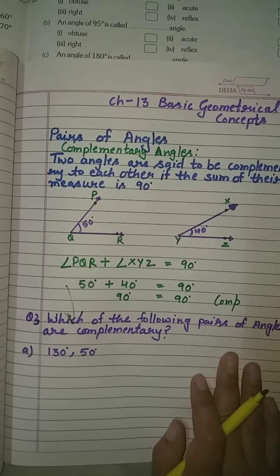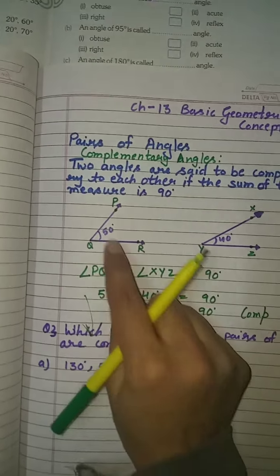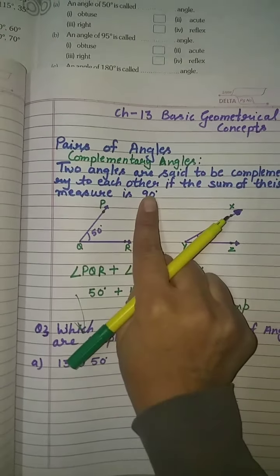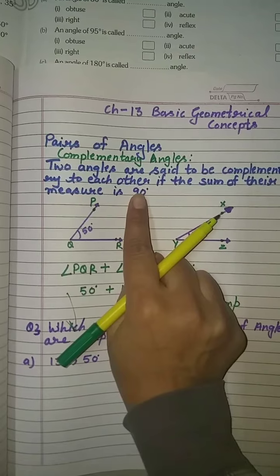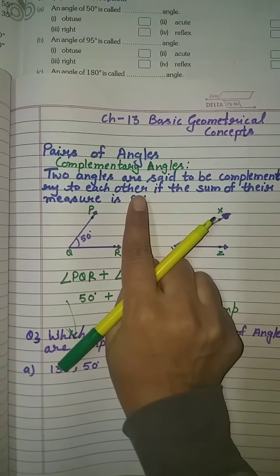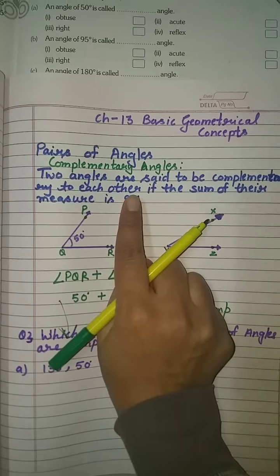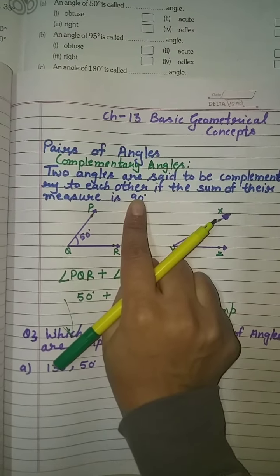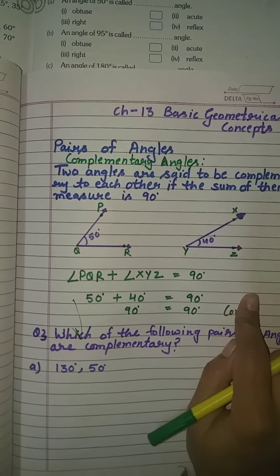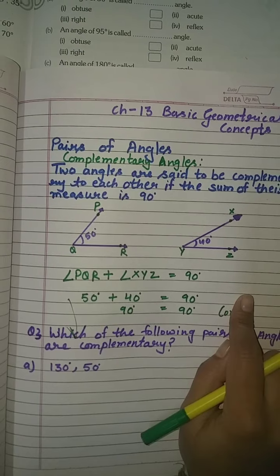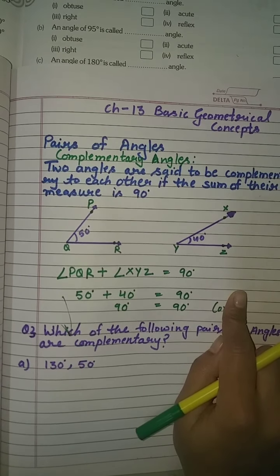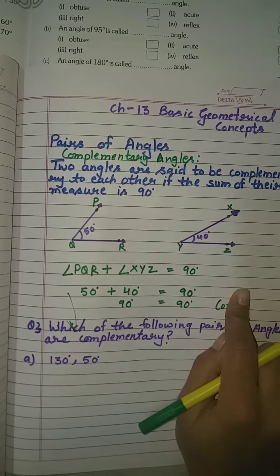Means, ki jab aap ki do angles ko hum plus karein, to hamara 90 degree hona chahiye. Agar us ki do angles ka sum 90 degree hai, that is your complementary angles. Agar unka 90 degree nahi hai, that is not a complementary angle.